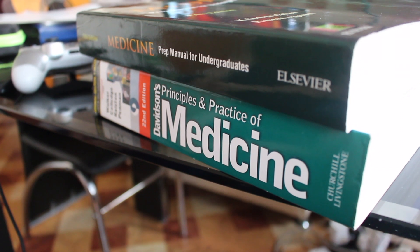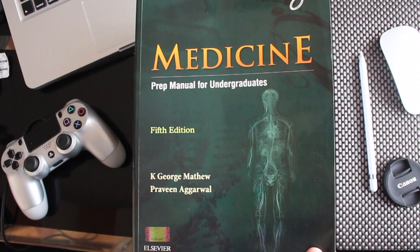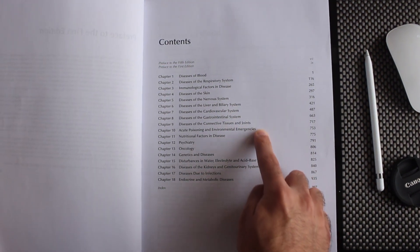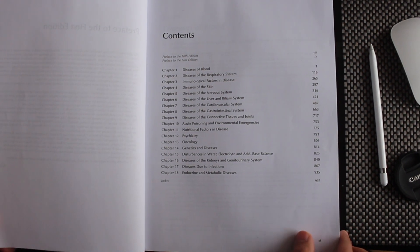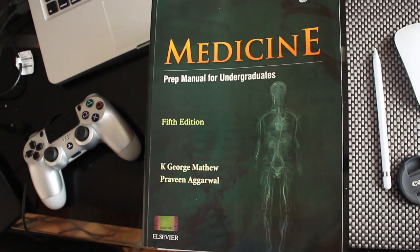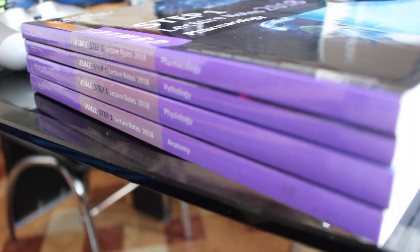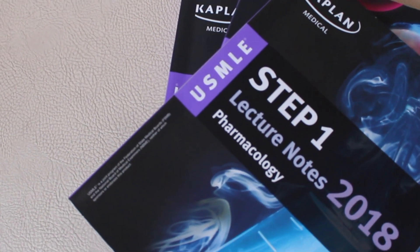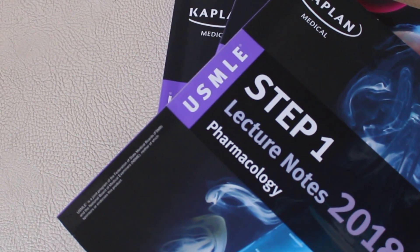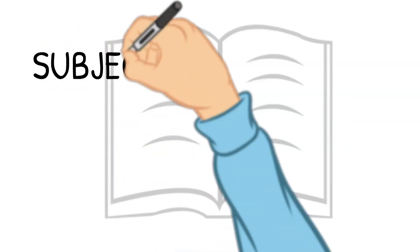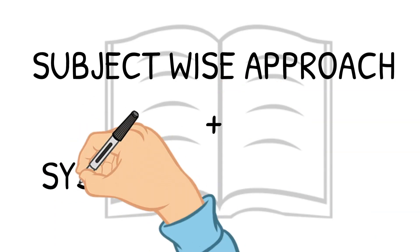A system wise approach is what you're eventually going to do when you start to study clinical subjects like internal medicine. Medicine is a vast topic and it makes sense to divide it into different systems so you can integrate your knowledge and understand the material better. Imagine doing all the diagnoses of diseases first and then only moving to their treatments — that would make no sense. Same way, preclinical subjects can also be approached like this. Instead of studying all of human anatomy, then physiology, then only moving to pathology and pharmacology, it will make more sense to do these system wise.